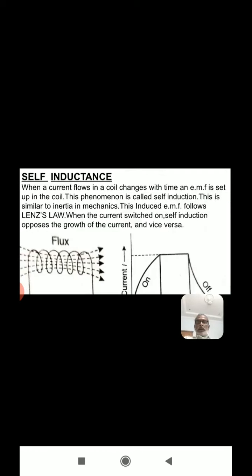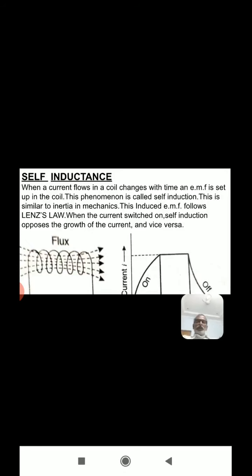Suppose the north pole of the magnet moves towards the coil connected to a galvanometer. As the magnet is pushed towards the circuit, a magnetic flux is produced by the induced current's magnetic field. Depending on this electromagnetic induction, we can observe the self-inductance.